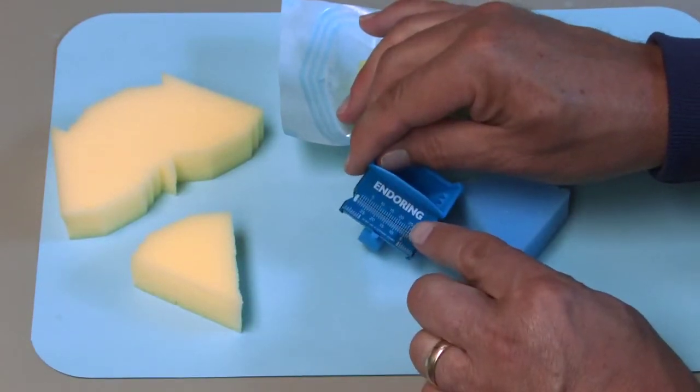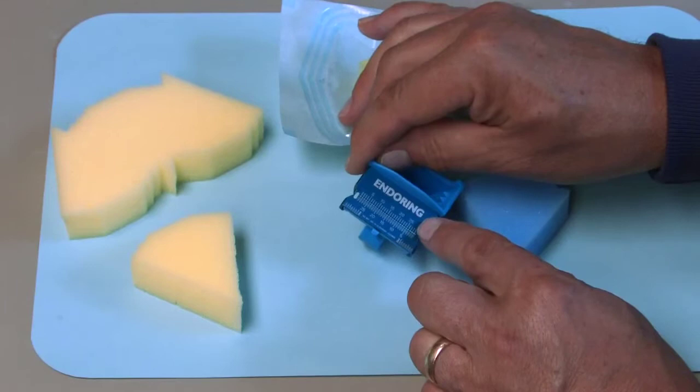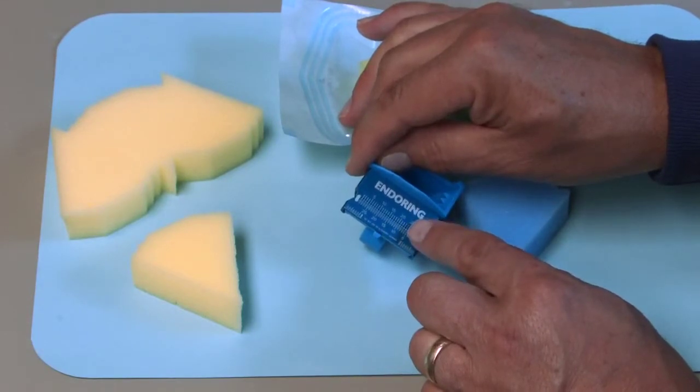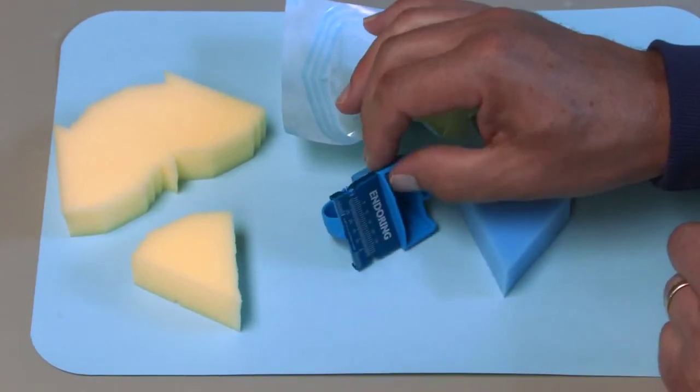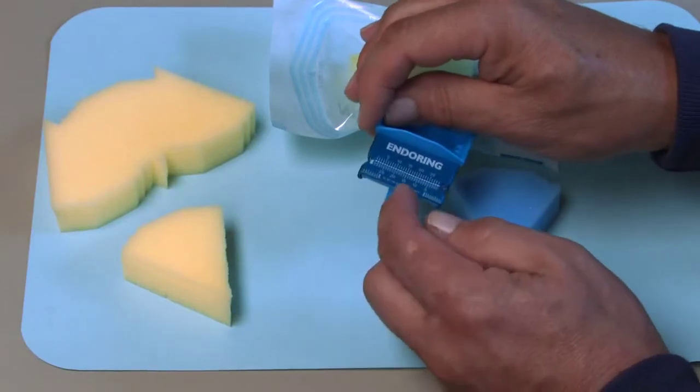It is important to note that the first time the Ender Ring 2 is autoclaved, the metal ruler should be attached to the Ender Ring 2. On all subsequent autoclavings, we recommend that the metal ruler be separated from the Ender Ring 2 in order to maintain proper retention of the ruler to the Ender Ring 2.